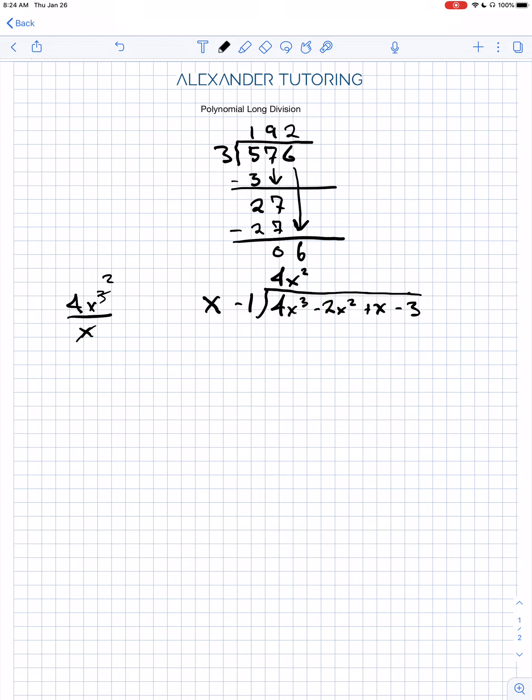So we get 4x squared times x is 4x cubed. If you do it right, these two terms will always be the same. And then we have to do 4x squared times negative 1 to get negative 4x squared.